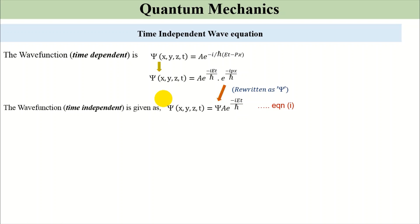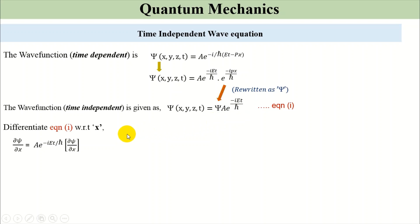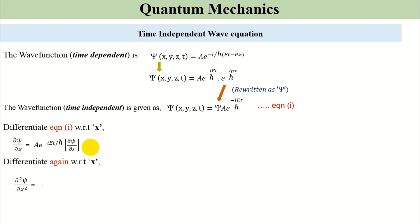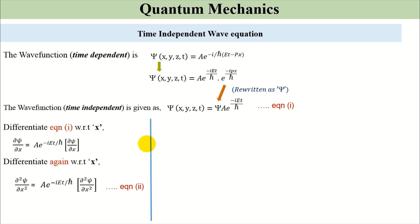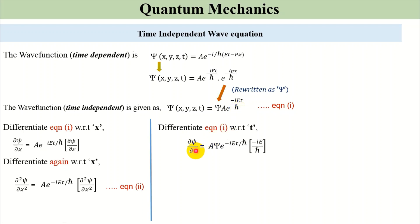Using this as equation one, we differentiate with respect to x. Since there is no x term in the exponential time factor, partial differentiation gives: ∂ψ/∂x = A·e^(−iEt/ℏ) · ∂ψ/∂x. Differentiating again: ∂²ψ/∂x² = A·e^(−iEt/ℏ) · ∂²ψ/∂x². This is equation two. Differentiating equation one with respect to time t: ∂ψ/∂t = ψ · A·e^(−iEt/ℏ) × (−iE/ℏ). This is equation three.